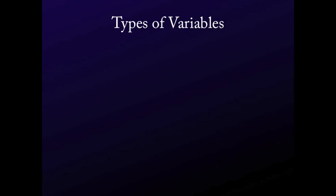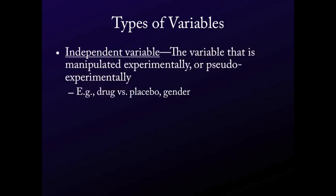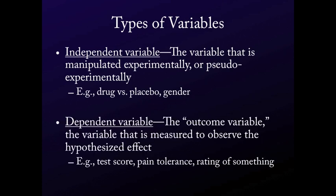There are two types of variables. Independent variables are the variable that is manipulated experimentally or pseudo-experimentally. Experimentally, you could give someone a drug versus a placebo — that's an independent variable. Pseudo-experimentally, you could look at gender; you can't randomly assign people to different genders, so that's a pseudo-experimental independent variable. The dependent variable, often called the outcome variable, is the variable you're measuring to observe whatever hypothesized effect it is — test scores, anxiety levels, happiness — these are all dependent variables.